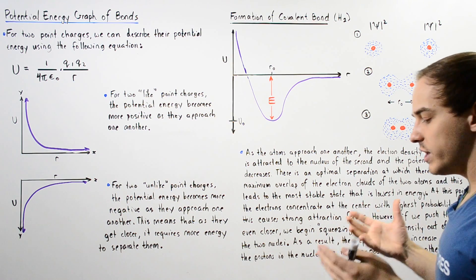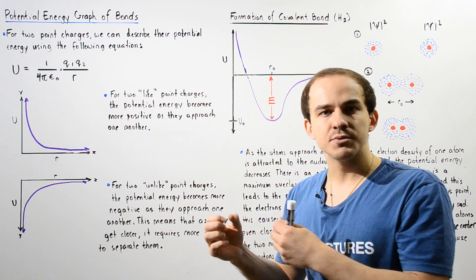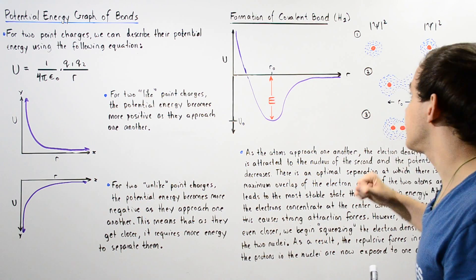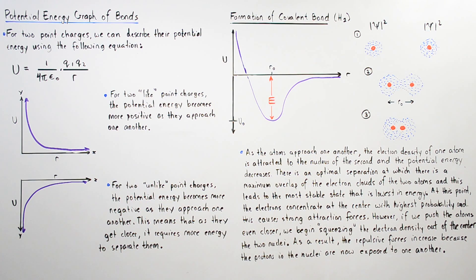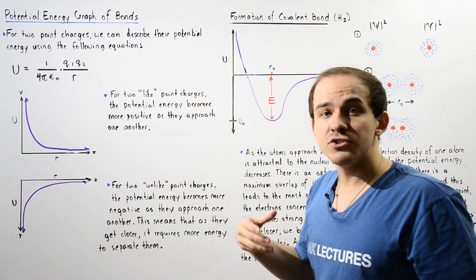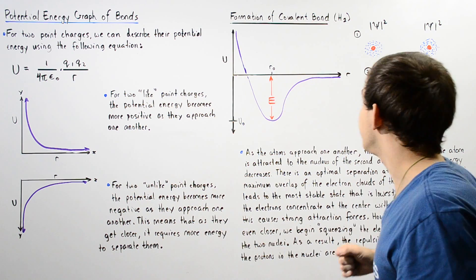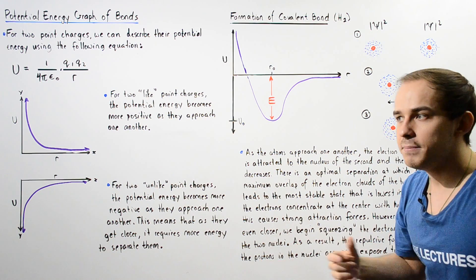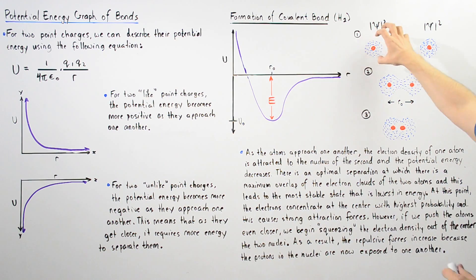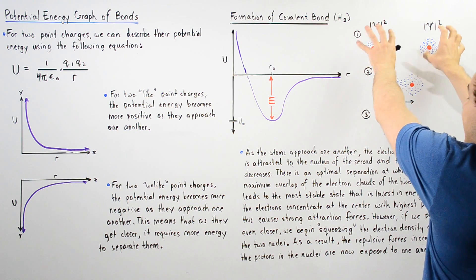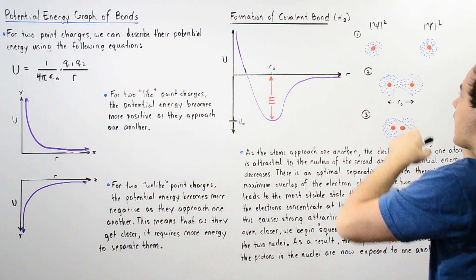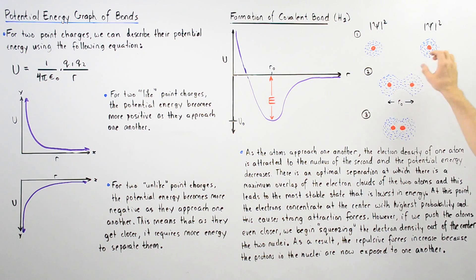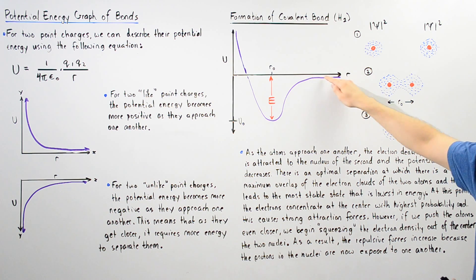In diagram one, we have two individual H atoms that are separated by some relatively large distance. These diagrams describe the probability distribution, or probability density, for our electron. The dashed lines represent a high probability of finding our electron within that particular volumetric region. In diagram one, our two hydrogen atoms are found far away, so the atom is found somewhere within that particular region.